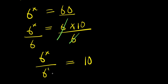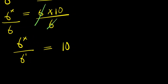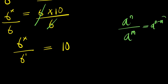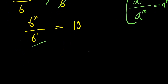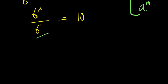And this 6, I can reduce it to the power of 1. We consider this: if you have a to the power of n divided by a to the power of n, this equals a to the power n minus n. So applying that here, I will have 6 to the power of x minus 1 equals 10.